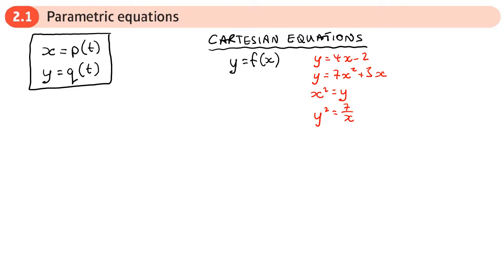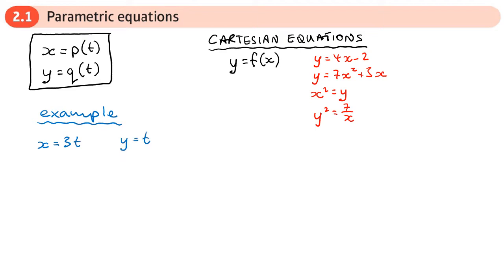But with a parametric equation, we introduce a third variable, t. Now t does not get plotted on the axis — we still plot x and y — but we use different values of t to get x and y coordinates. So for example, the way that we get our x coordinate is by doing 3t, and the way that we get our y coordinate is by doing t squared.